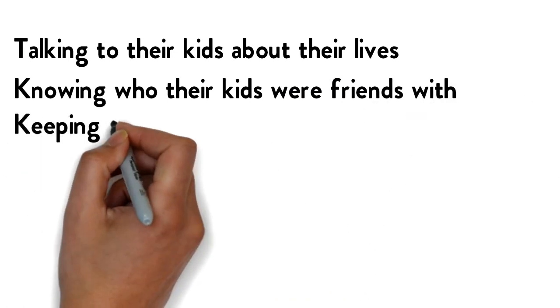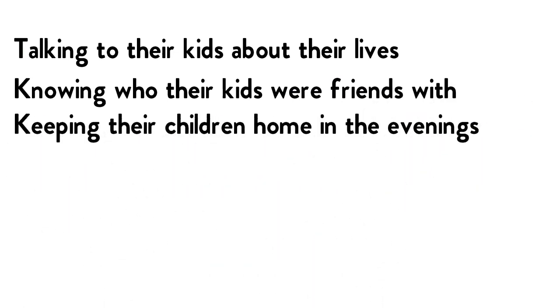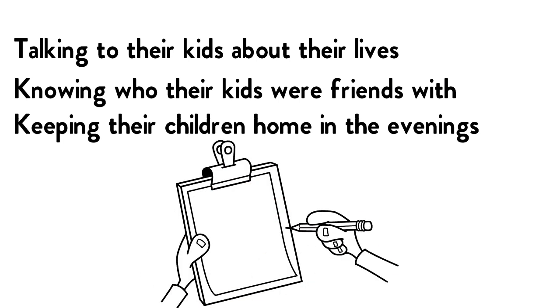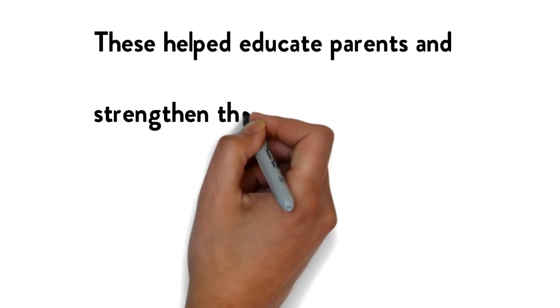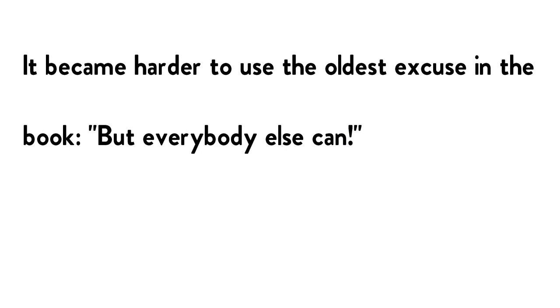Knowing who their kids were friends with. Keeping their children home in the evenings. Parents also needed to sign agreements. These helped educate parents and strengthen their authority at home. It became harder to use the oldest excuse in the book, but everybody else can.